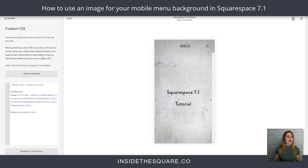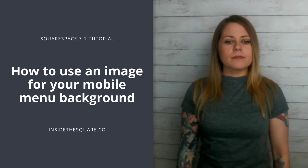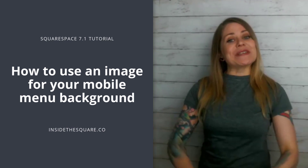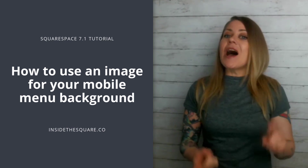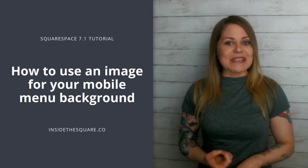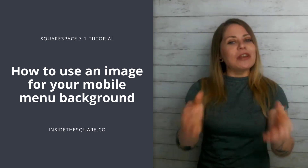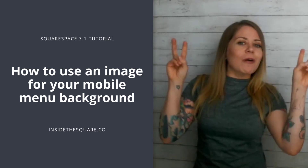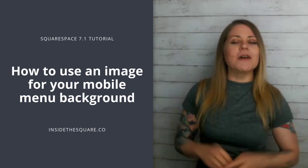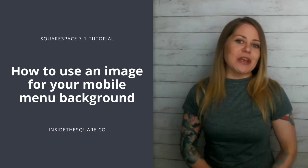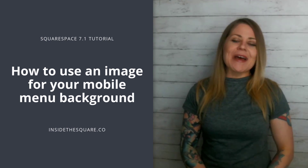Go ahead and select Save when you're done and you'll be good to go. That's it for this super simple tutorial. Upload your image into the custom files section, and then using the code in the description below, replace "URL goes here" with the new URL for the image you just uploaded.